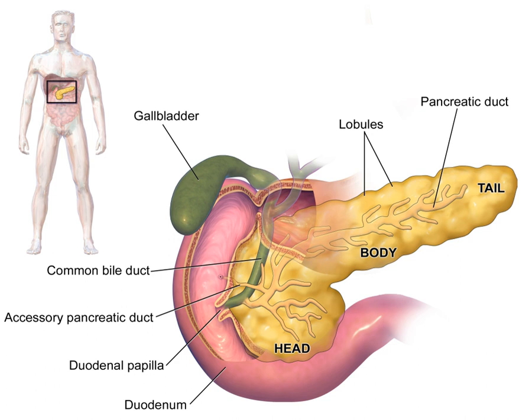As an endocrine gland, it functions mostly to regulate blood sugar levels, secreting the hormones insulin, glucagon, somatostatin, and pancreatic polypeptide. As a part of the digestive system, it functions as an exocrine gland secreting pancreatic juice into the duodenum through the pancreatic duct.